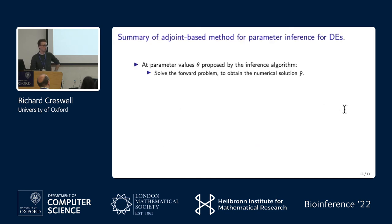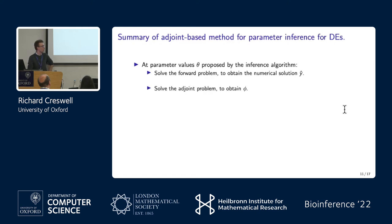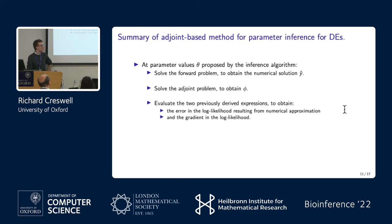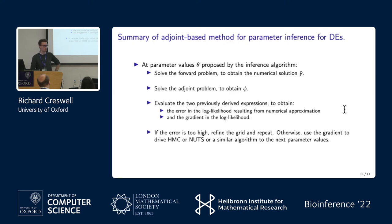To summarize in plain terms: at each value of the parameters theta proposed by the inference algorithm, we first solve the forward problem to obtain an approximate numerical solution y-hat. We then solve the adjoint problem to obtain phi, and evaluate the two expressions to obtain both the error and the gradient. If the error exceeds some threshold, we refine the grid based on the cumulative error calculation. If it seems good enough, we use the approximate gradient to drive the No-U-Turn Sampler, HMC, or a similar sophisticated gradient-based sampler.